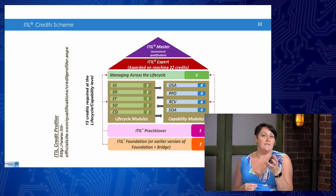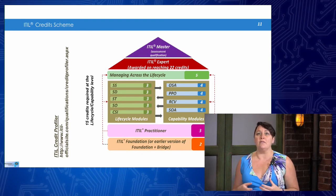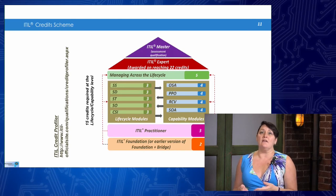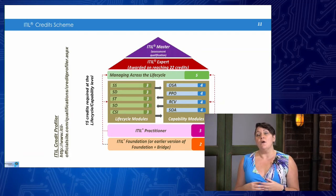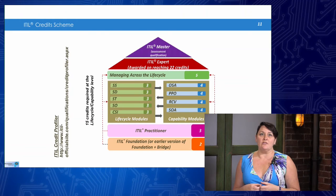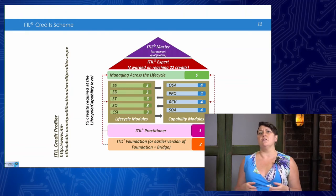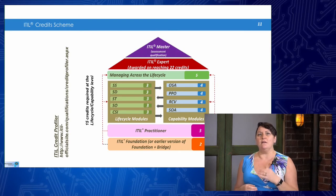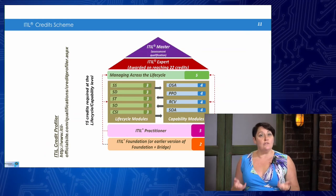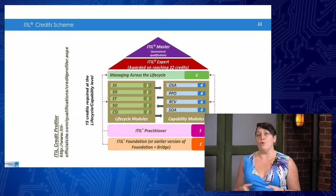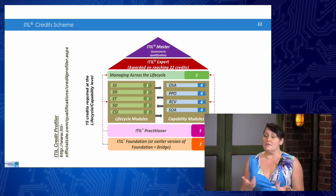Every single one of these classes has a credit score beside it — two credits for ITIL foundation, three for lifecycle modules, and four for capability modules. We need to ensure that we have achieved a minimum of 15 credits at either lifecycle or capability module level in order to qualify to sit the managing across the lifecycle class. We take two credits from ITIL foundation as a prerequisite, and then add another 15 credits from either the lifecycle or capability stream.